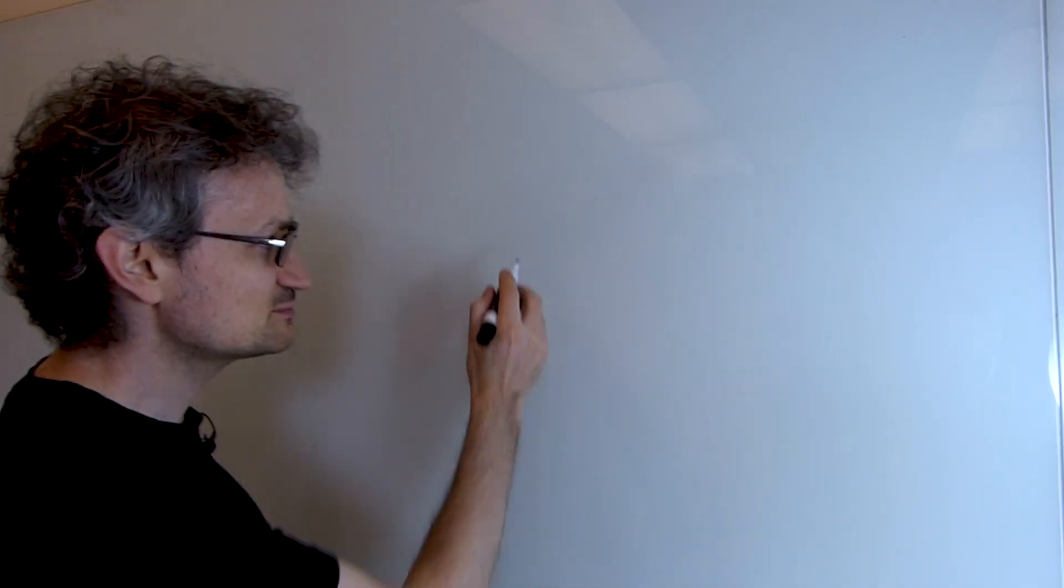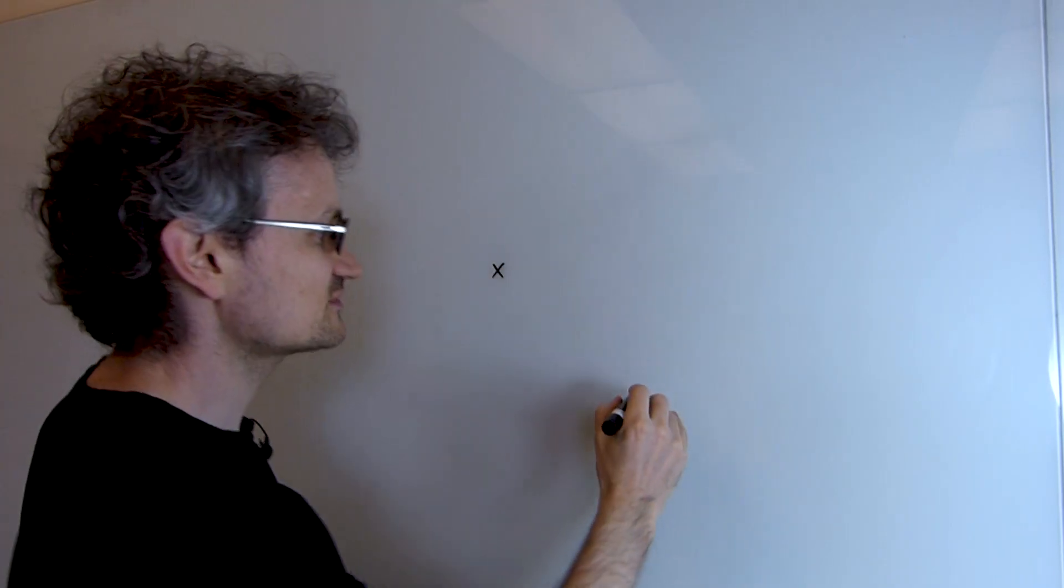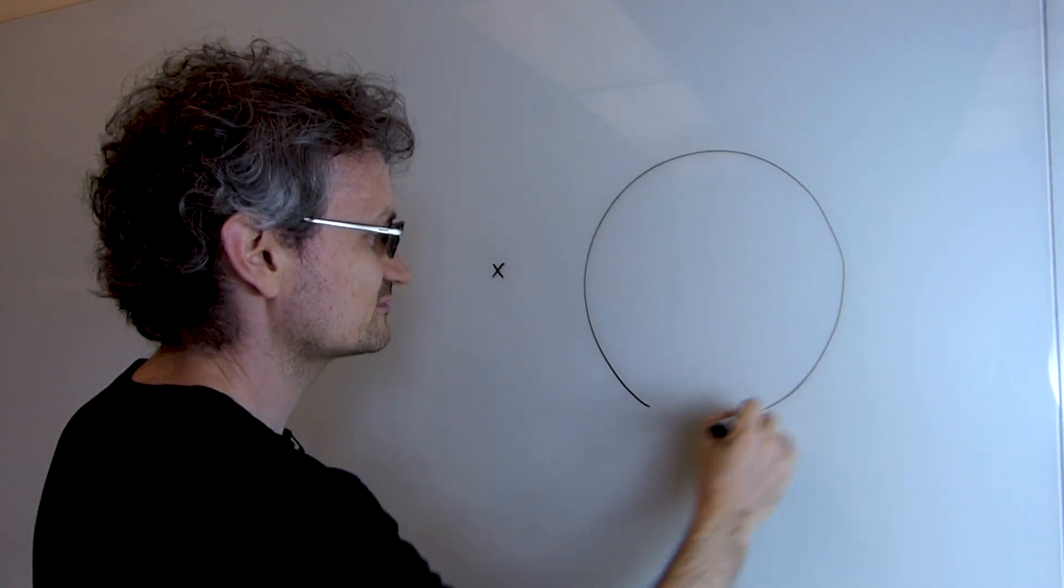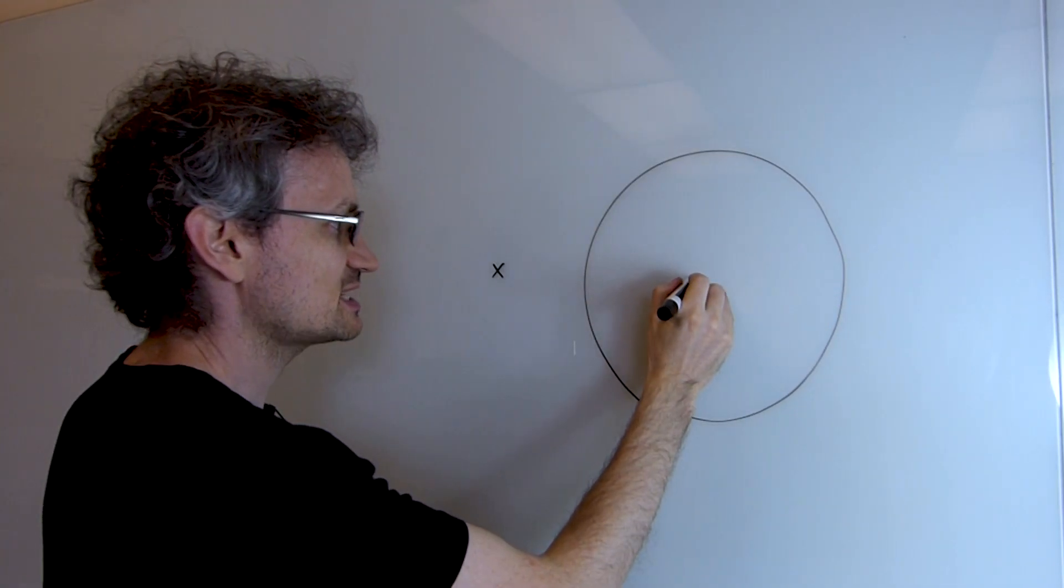We made this simulation using a technique called ray marching. The first idea here is that the objects in the space are described by something called a signed distance function. For each point in space, the signed distance function tells us how far away from the objects we are. So for example...